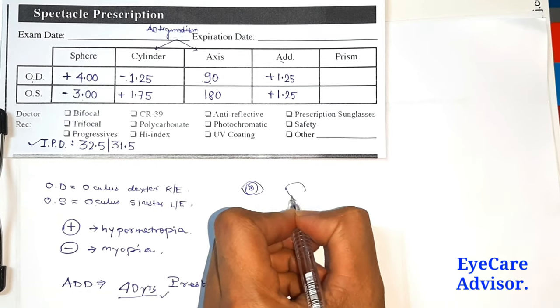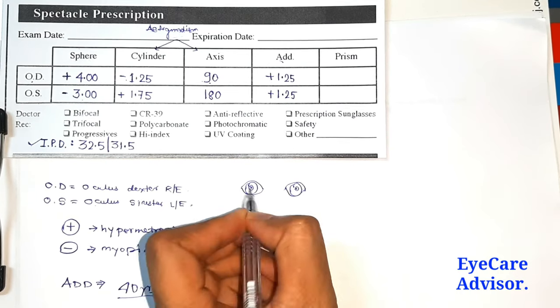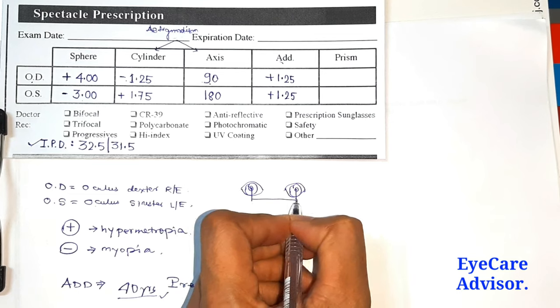Basically, for example, if you consider the eye, this is the center of the eye. So IPD means from the center of one eye to the center of the other eye, this total distance is known as the IPD.